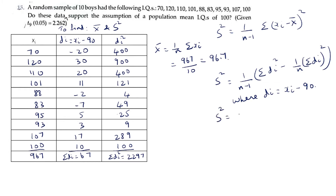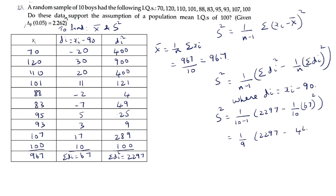We can now find S² as (1/(10-1)) × [Σdi² - (1/10)(Σdi)²] = (1/9) × [2297 - (67²/10)] = (1/9) × [2297 - 448.9] = 1848.1 / 9 = 205.34.